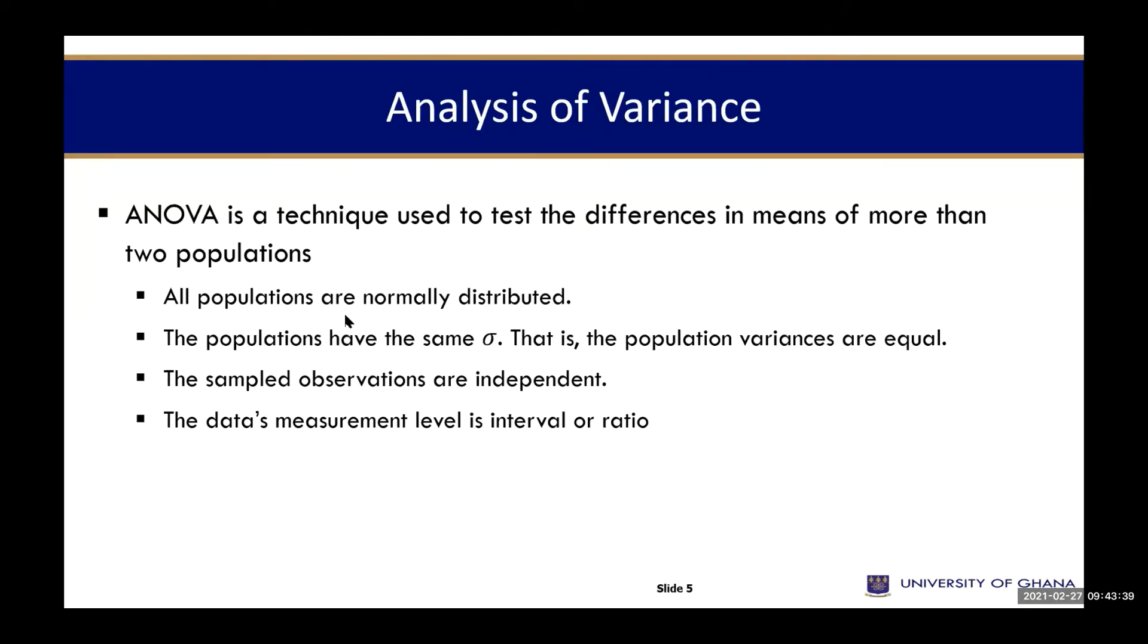The first assumption is that all the populations should be normally distributed. We are saying that the differences in variance should be different from each other. They should be normally distributed. You should have a representation of the data you are going to use. The second assumption is that the populations should have the same standard deviation, or the population variances should be equal.